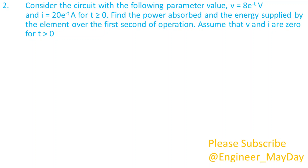Here is a second question. Consider the circuit with the following parameter values: V equals 8e to the power negative T volts and I equals 20e to the power negative T amperes for T greater than or equal to 0. Find the power absorbed and the energy supplied by the element over the first second of operation. Assume that V and I are 0 for T less than 0.